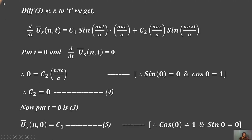Differentiating Equation 3 with respect to t: dUˢ/dt = −C₁·(nπc/a)·sin(nπct/a) + C₂·(nπc/a)·cos(nπct/a). Applying the initial condition ∂u/∂t at t=0: we get 0 = C₂·(nπc/a), since cos(0)=1. Therefore C₂ = 0.